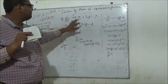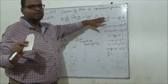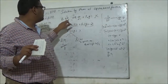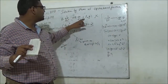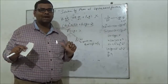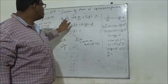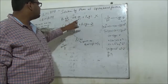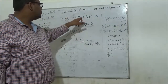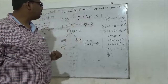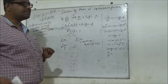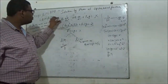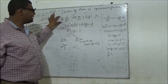Let us consider the linear differential equation of second order: p0·d²y/dx² + p1·dy/dx + p2·y = X. Here p0, p1, and p2 are the coefficients of the second order, first order derivatives, and y respectively, and X on the right-hand side can be a function of x or a constant. So this is the differential equation of the second order.